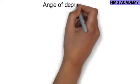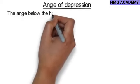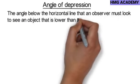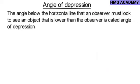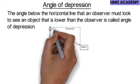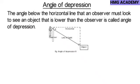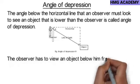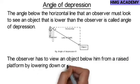Now let's look at angle of depression. The angle below the horizontal line that an observer must look to see an object that is lower than the observer is called angle of depression. You can see in the diagram that the observer is high up looking at the object below — the line of sight is below the horizontal — and the angle the arrow is pointing to is called the angle of depression. The observer lowers or depresses his head to look down at the object.